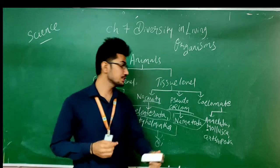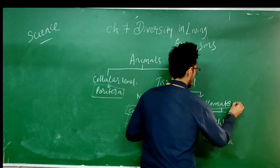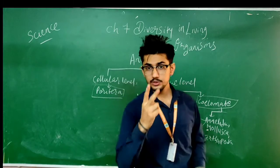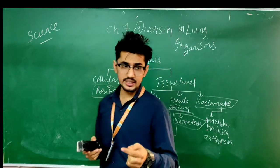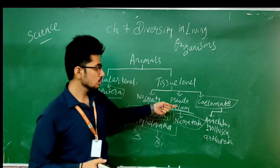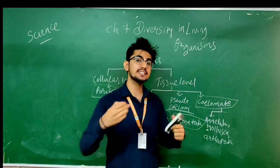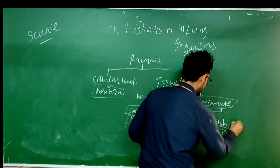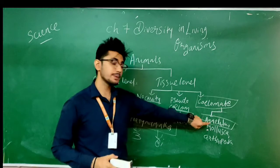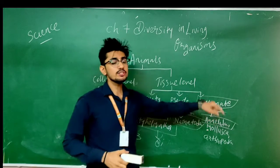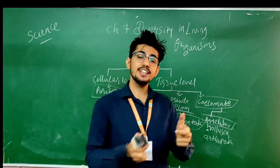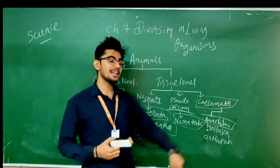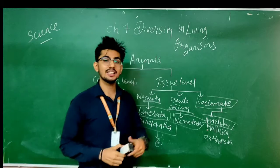Now let us move on to the next level, which is the coelomata — the true cavity. Here you can see a true cavity, a true hollow space. So coelomata means the animals which are having a true cavity inside the body. The first organism for the true cavity is Annelida. Annelida are organisms which have a true body cavity or true space inside them. Because of that true space, they have the space for complete organs — the body can accommodate organs using this space. So Annelida can have proper organs like reproductive organs, digestive organs, and so on.